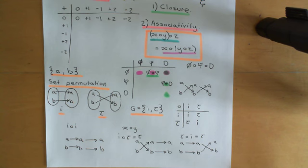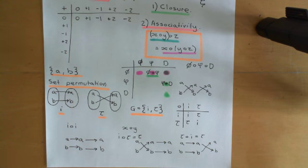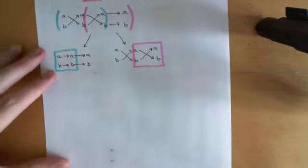What I now want to show you is how you can think of the integers — our example of a group — as representing set permutations. The integers under addition is a group, and it does obey associativity. So how can we think of the integers as representing set permutations? What sets are they representing set permutations of? Let me discuss that with you.